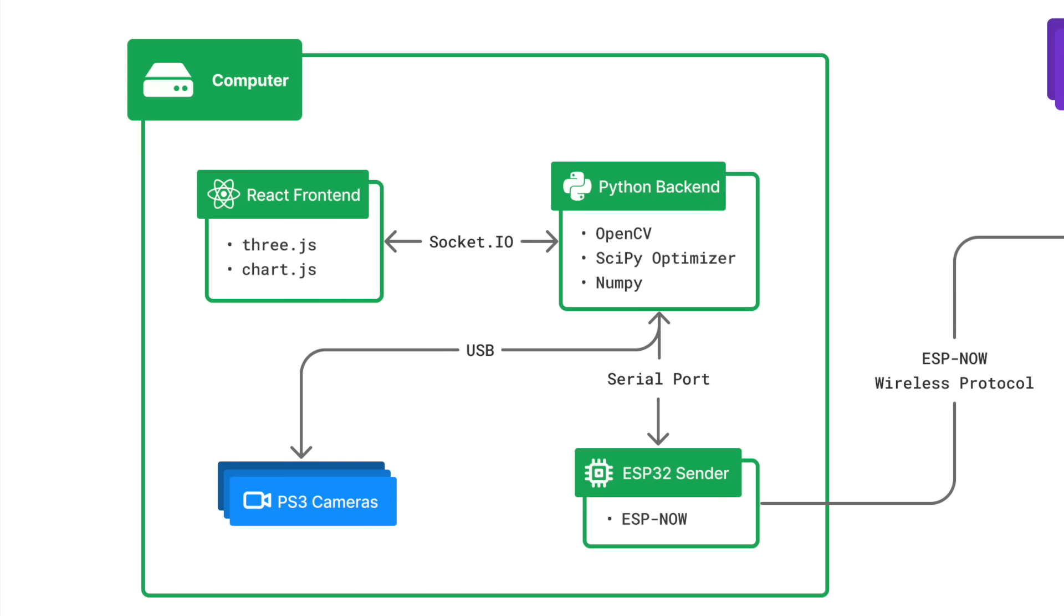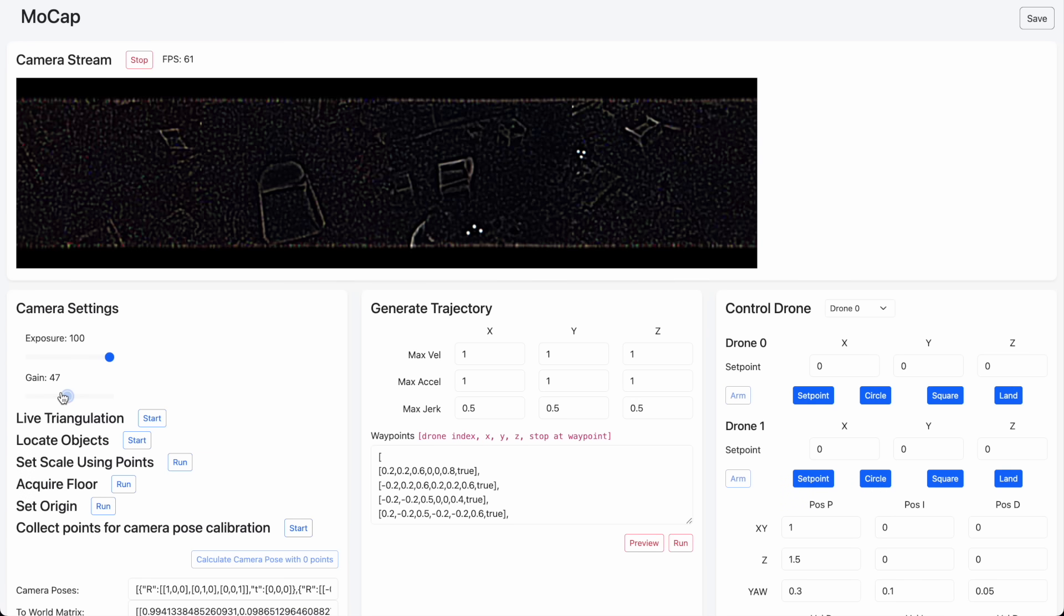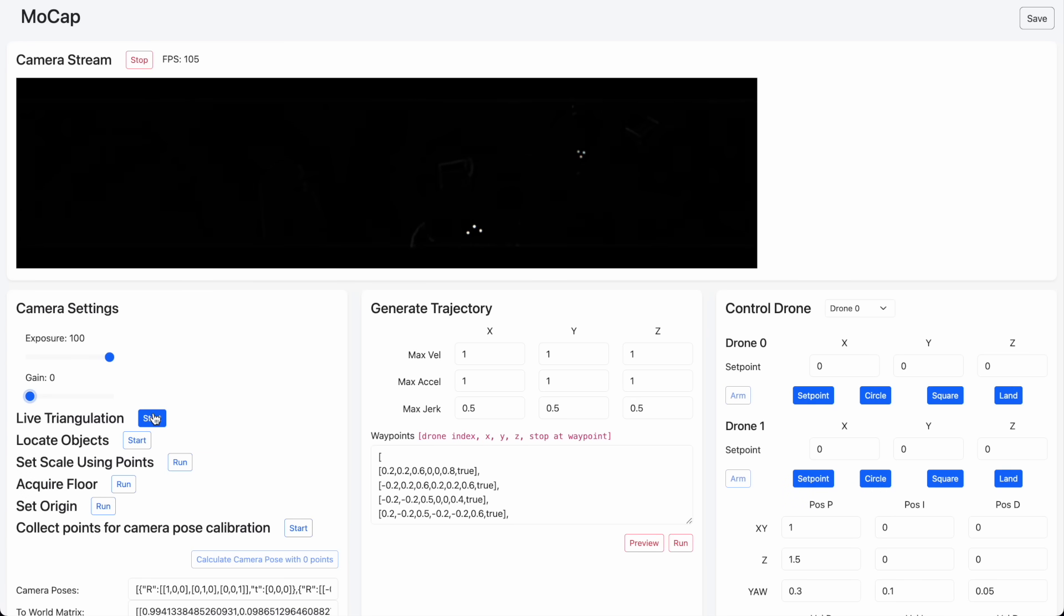To control the whole system, I built a web interface in React which communicates to the Python backend via socket.io. The left pane of the frontend allows you to tweak the camera exposure and gain settings, start triangulation, and enable drone tracking.